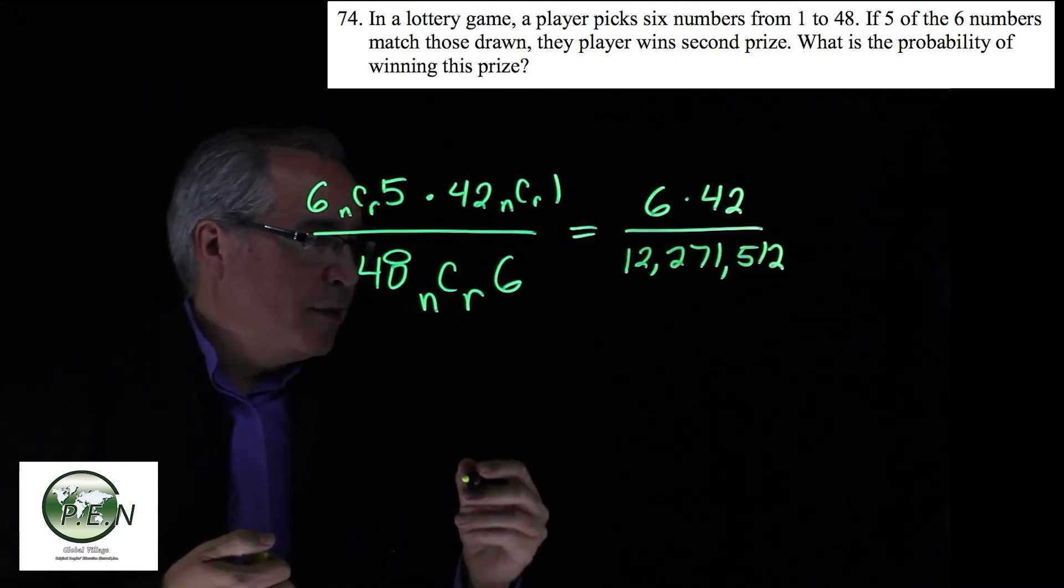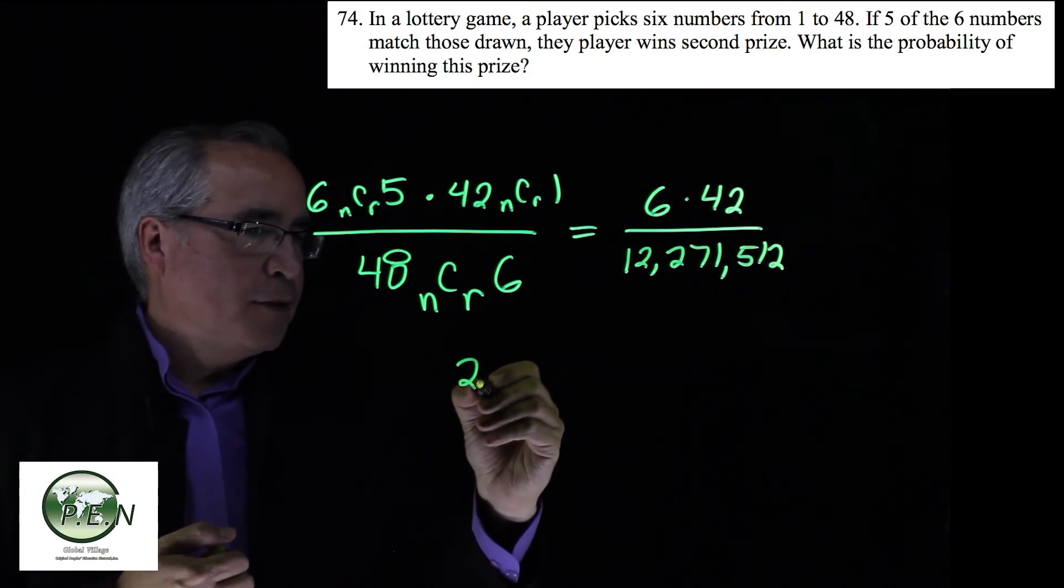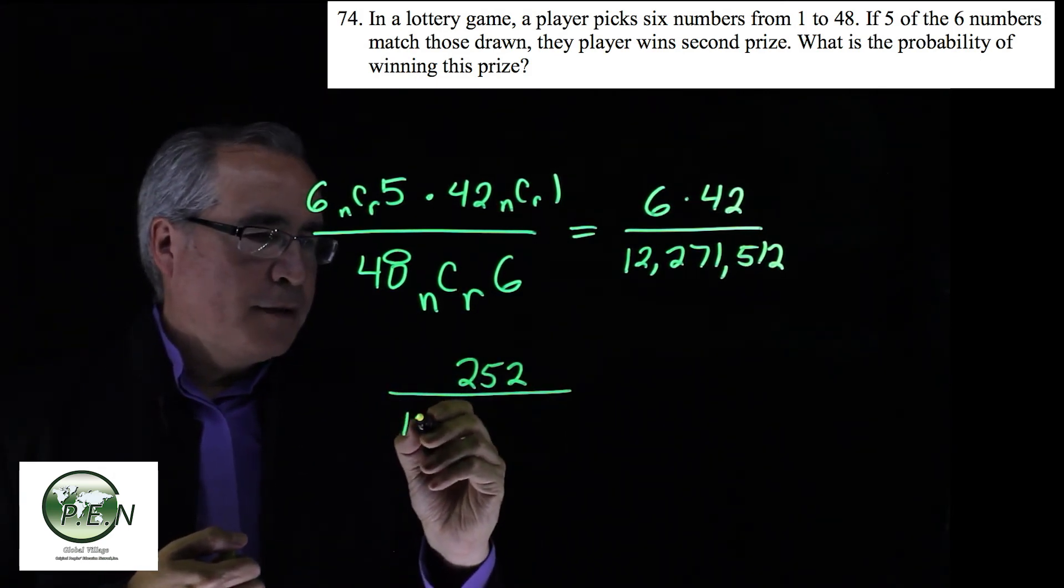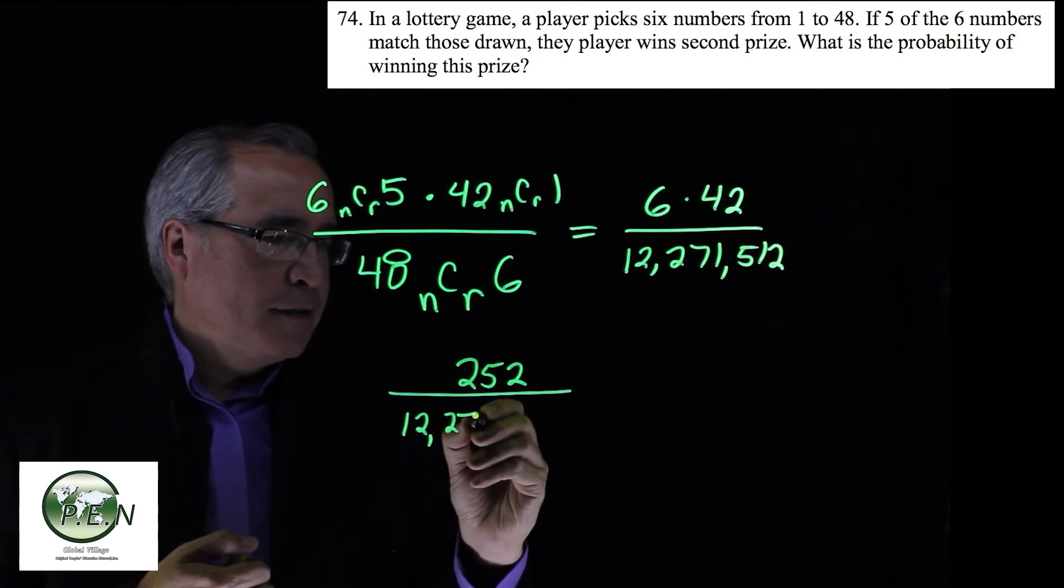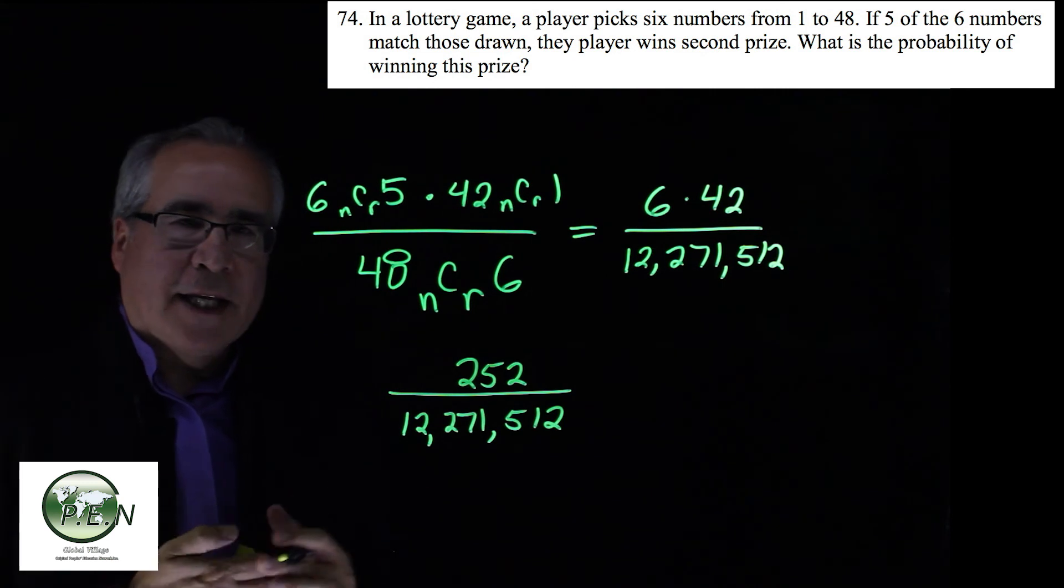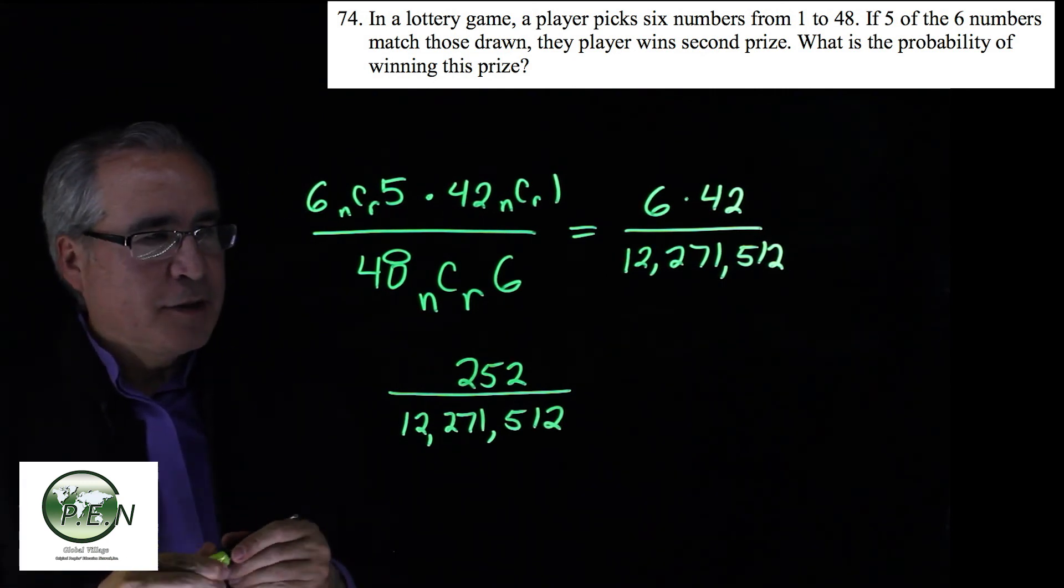So then you end up with six times 42 is 252 over 12,271,512. And that's how they left the answer in the back of the book.